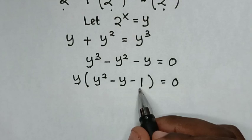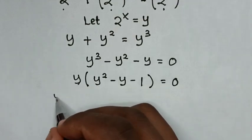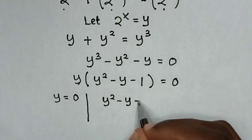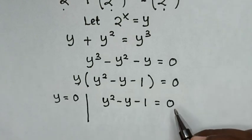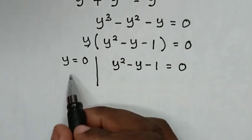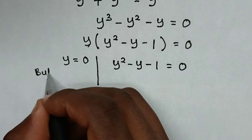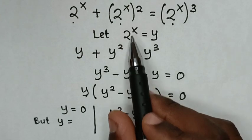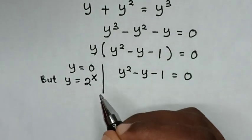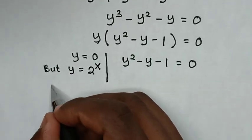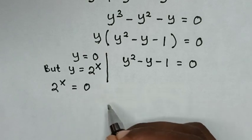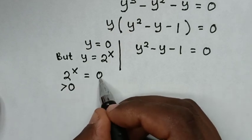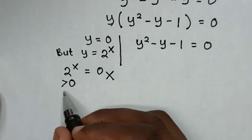From this equation we have two solutions. The first solution is y is equal to 0, and the second solution is y squared minus y minus 1 is equal to 0. From the first solution, y equals 0 means 2 power x equals 0. But 2 to the power of any number is greater than 0, so this solution is not possible and is rejected.